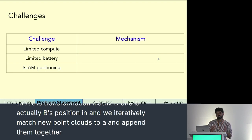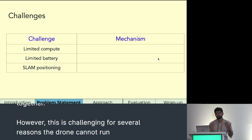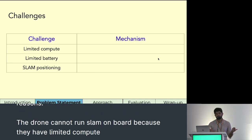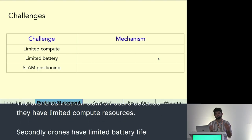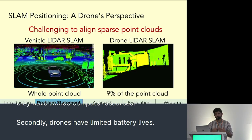However, this is challenging for several reasons. The drone cannot run SLAM onboard because drones have limited compute resources and limited battery lives. Also, SLAM was never designed to run on a drone. Onboard a vehicle like an autonomous vehicle, SLAM algorithms can use the entire 3D point cloud for localization. However, in our case, because the drone is in the air, SLAM has access to only 9% of the entire point cloud, making positioning difficult because it is challenging to align sparse point clouds.